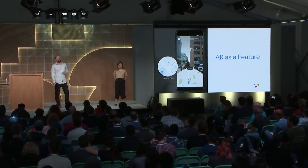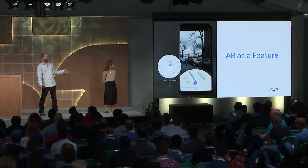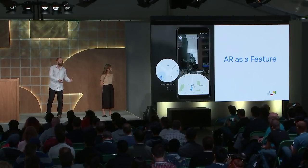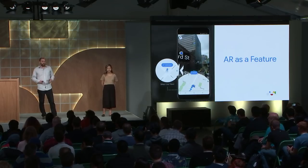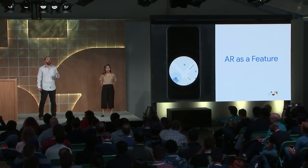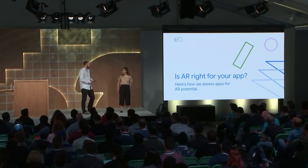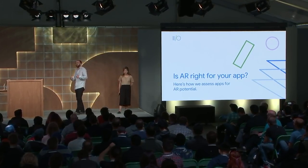AR as a feature essentially means the whole app isn't about AR. Google Maps is not an AR app — it helps you get where you're going and search for things. However, the team discovered that for certain areas like walking navigation, it can be really powerful to use AR in those moments. Same with the I/O app — if you pull it out and use Signpost, you can get where you're going. But it's not relegated just to navigational use cases, as we'll see later.